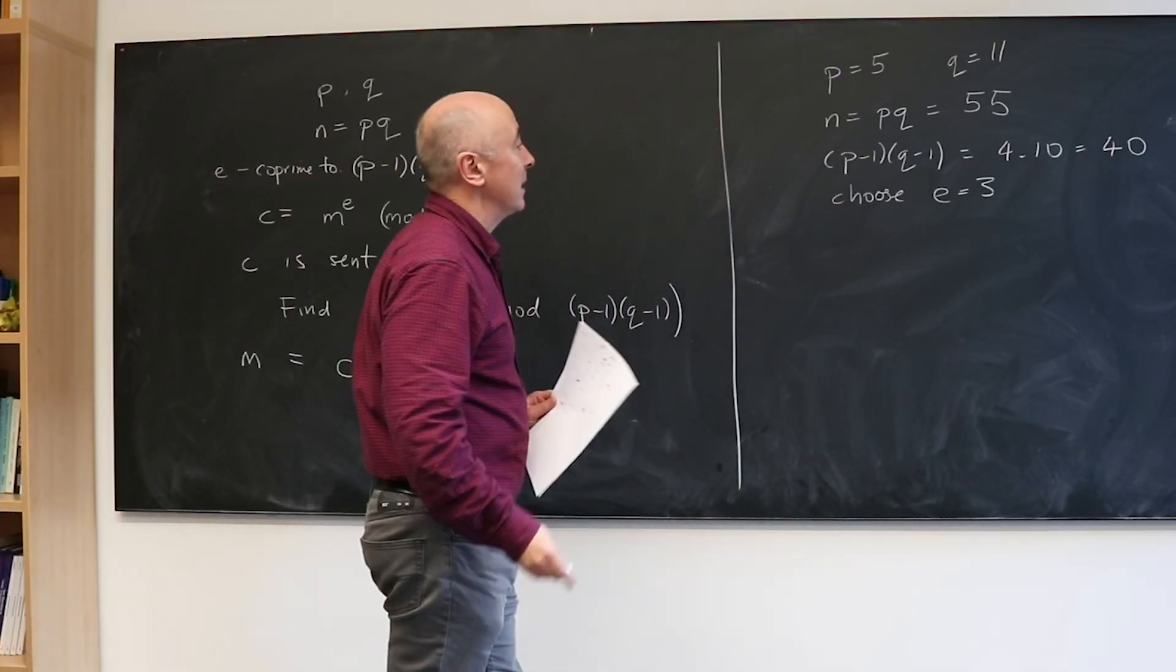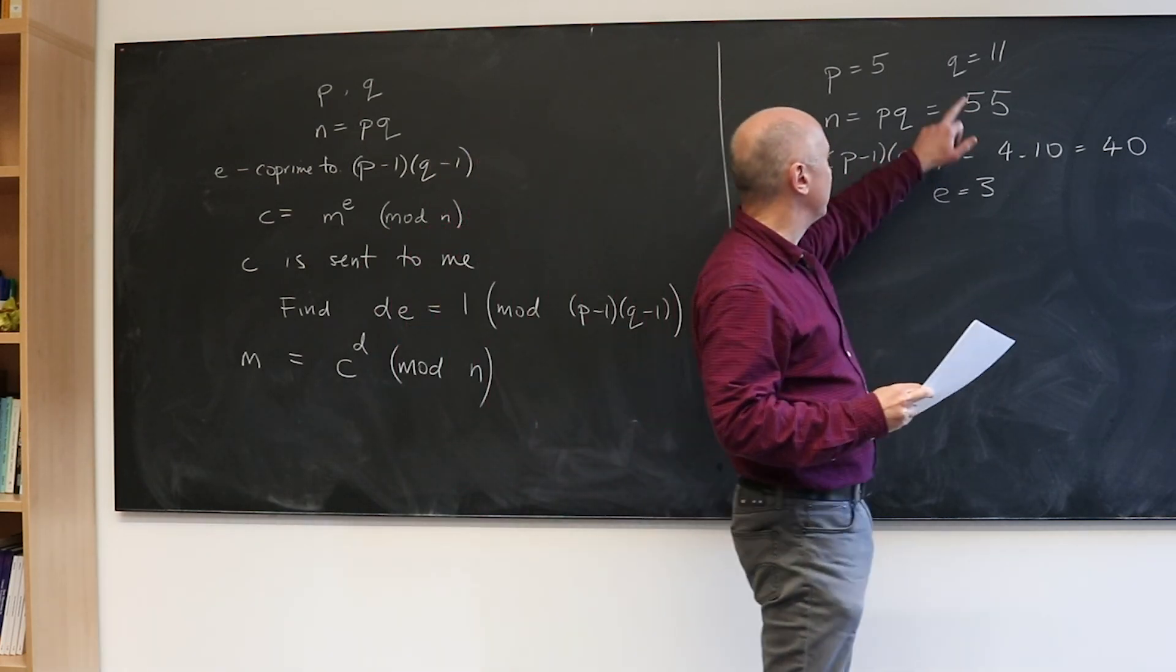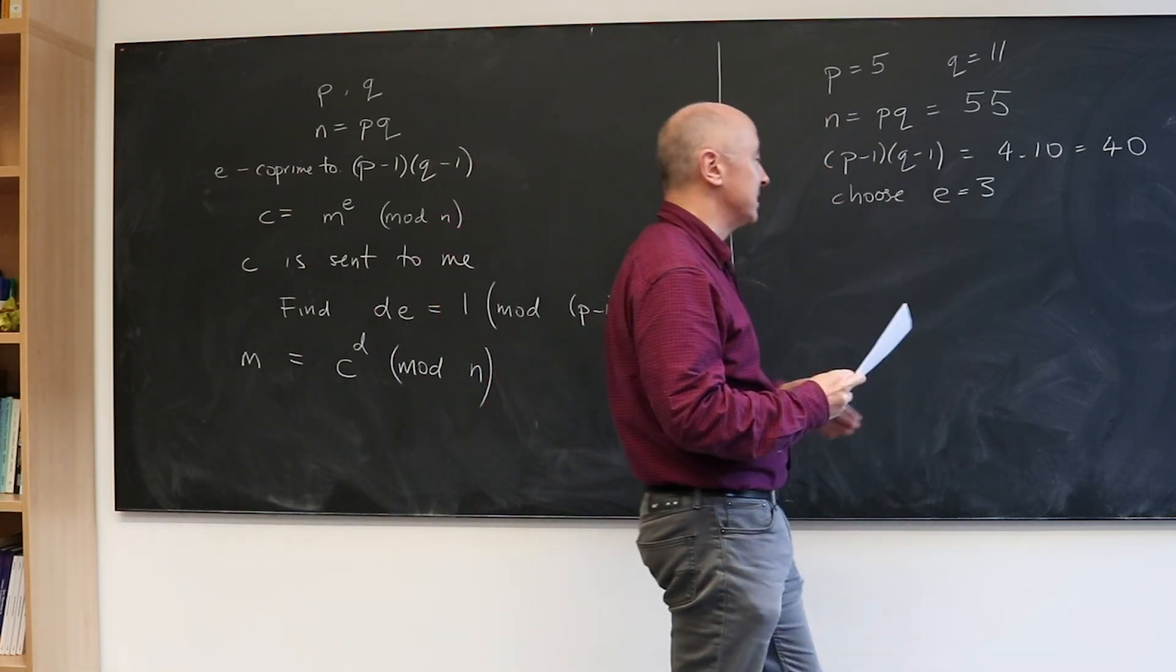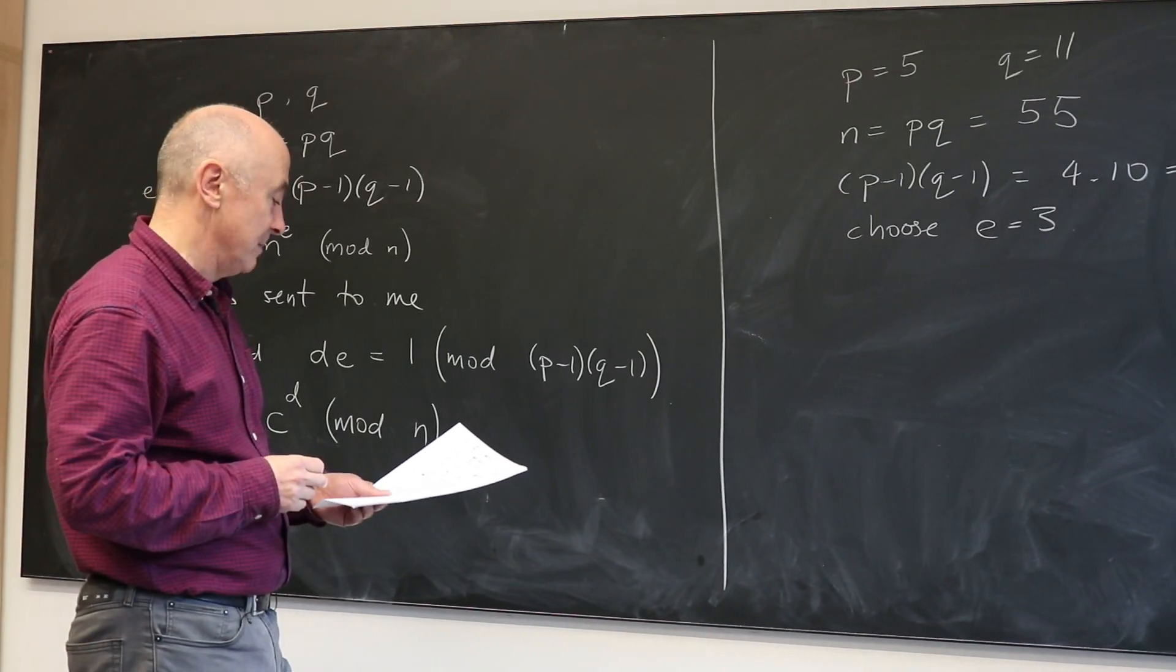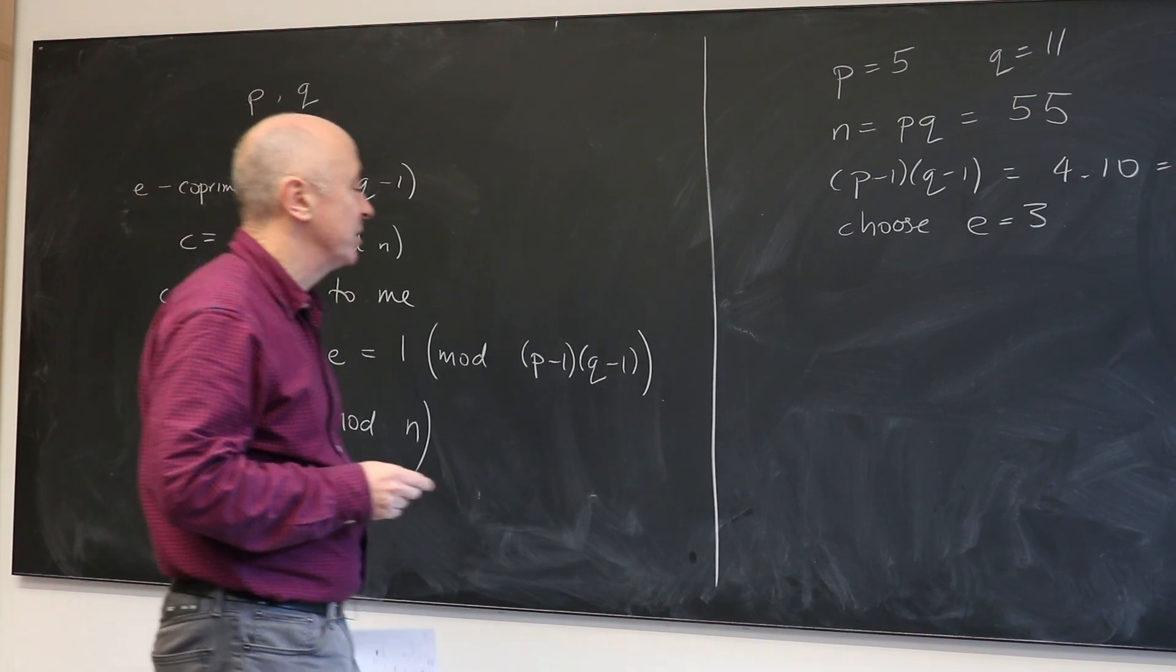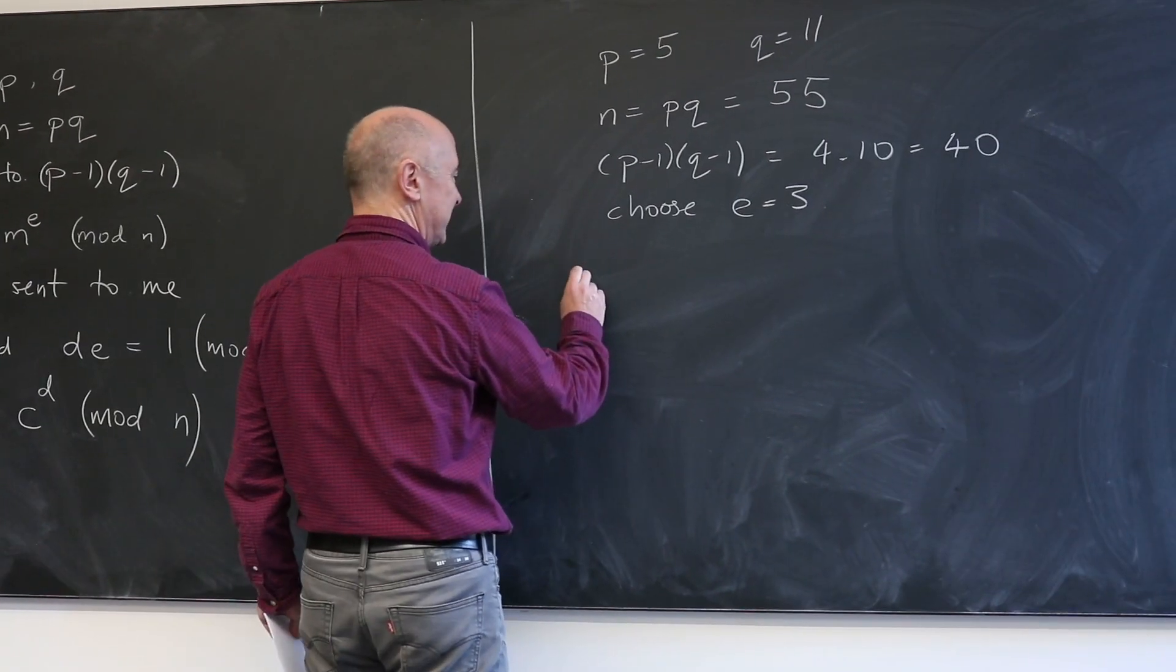And I'm going to advertise that as well. So what I advertise to the world outside is N which is 55 and E which is 3. And I say if you want to send me a message, use those two numbers. Let's say somebody wants to send me the message, a very simple message, the message 7.